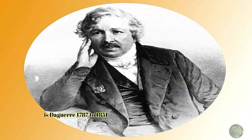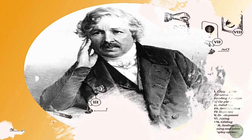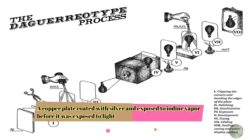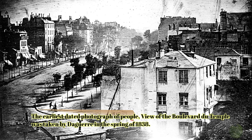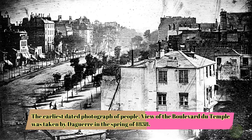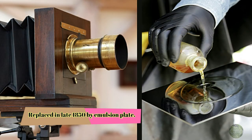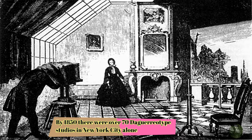Daguerreotype: Niépce's experiment led to a collaboration with Louis Daguerre. The result was the creation of the daguerreotype, a forerunner of modern film. A copper plate was coated with silver and exposed to iodine vapor before it was exposed to light. The early daguerreotypes had to be exposed to light for up to 15 minutes to create the image on the plate. The daguerreotype was very popular until it was replaced in the late 1850s by emulsion plates. It gained popularity quickly in Europe and the US — by 1850, there were over 70 daguerreotype studios in New York City alone.